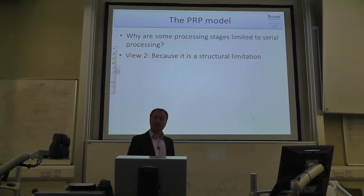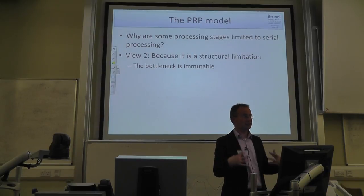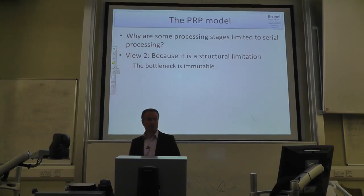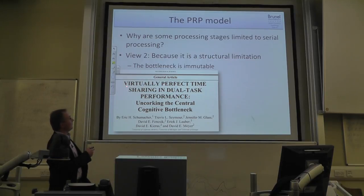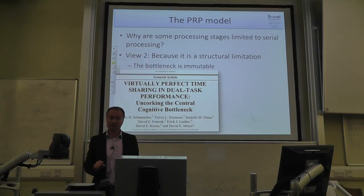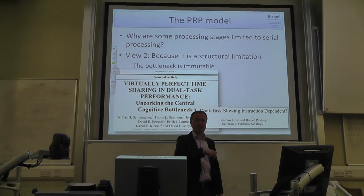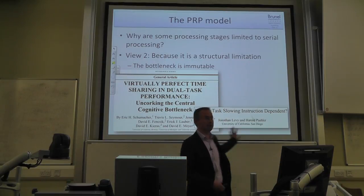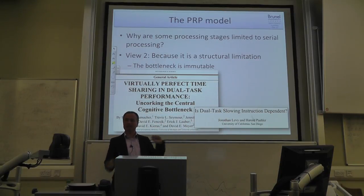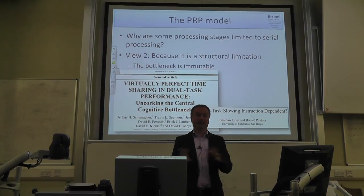The other view — probably the more popular one — is that it is simply a structural limitation. The bottleneck is immutable; we have a central capacity limitation in our mind that we cannot get rid of. There is a back-and-forth in the literature: some papers claim 'virtually perfect time-sharing in dual task performance' — supposedly showing no PRP effect — and then the other party of researchers argues that's only due to particularities of the design, and if done differently the PRP effect returns.